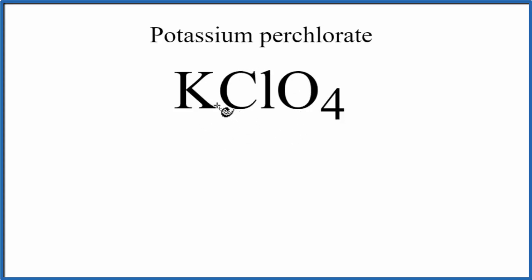Potassium, which is in group 1, has a 1 plus charge. The perchlorate ion, if you look that up on a table of common polyatomic ions, the entire perchlorate ion has a negative charge.